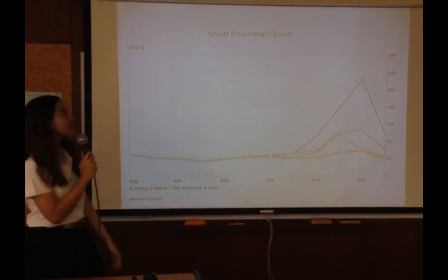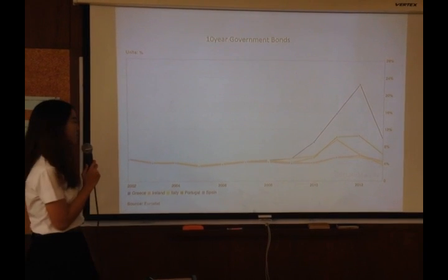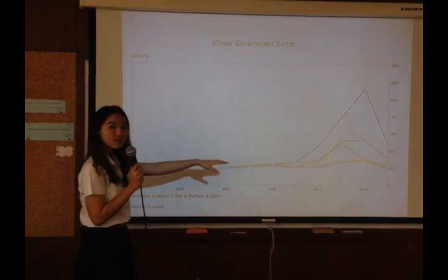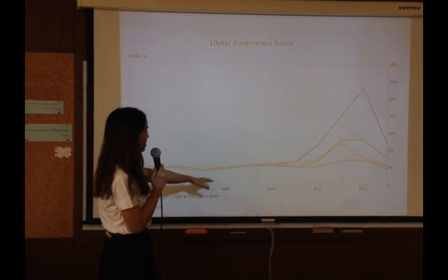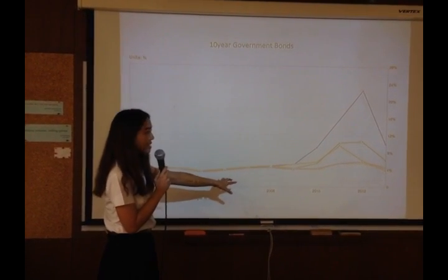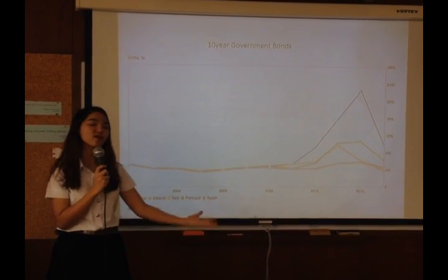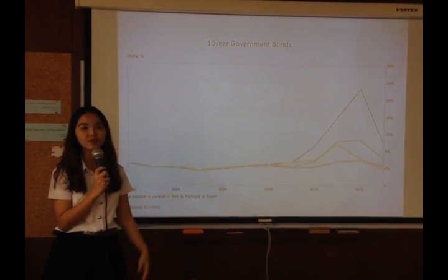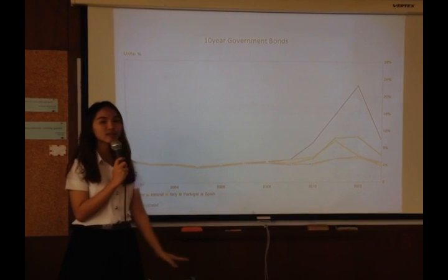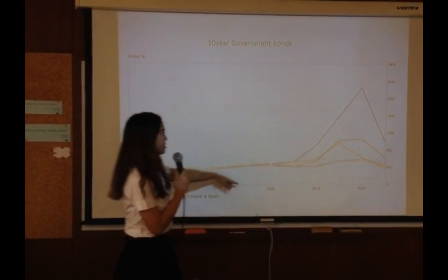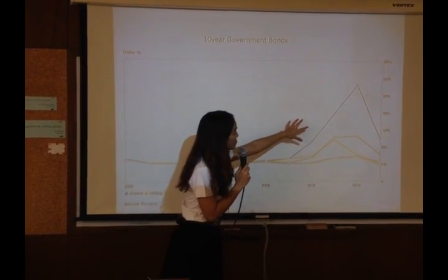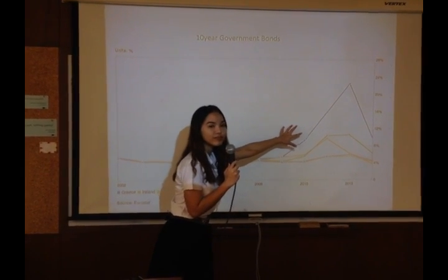The next indicator is the 10-year government bonds. As you can see in the graph, the interest rate of 10-year government bonds started increasing in 2008, because they tried to attract people to invest in their bonds. And the country which has the highest point of interest rate is Greece, at around 24%, compared to around 3% for others.